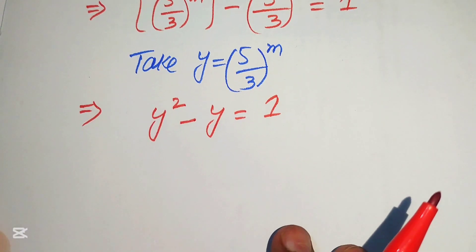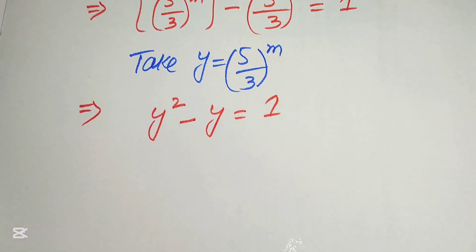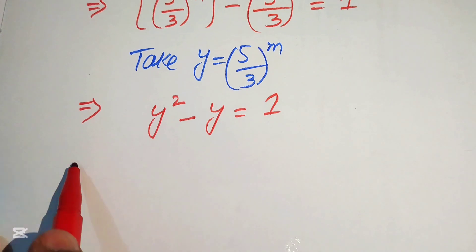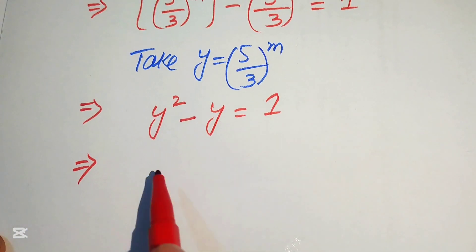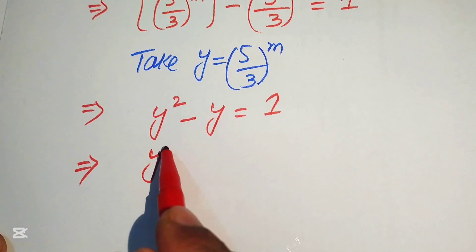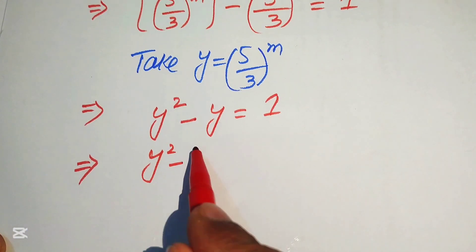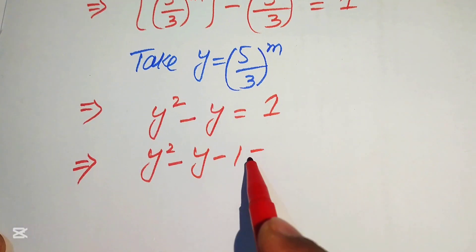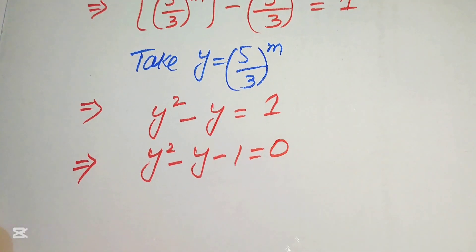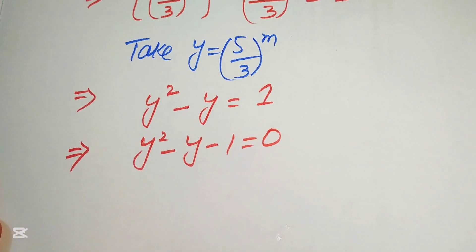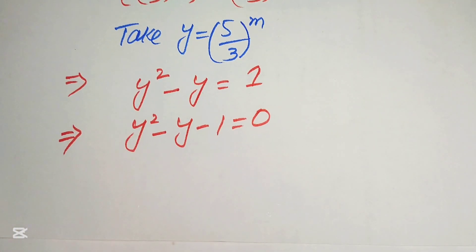This is now quadratic in y but not in standard form. We move 1 from the right-hand side to the left-hand side, giving us y squared minus y minus 1 equals 0.